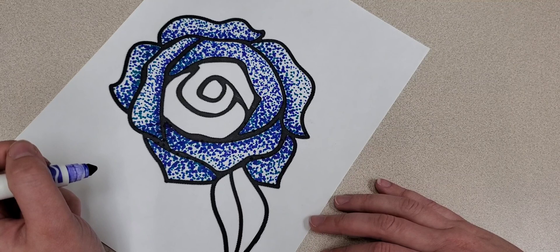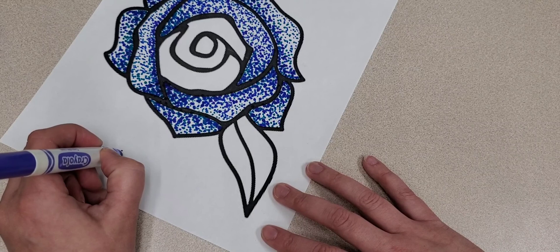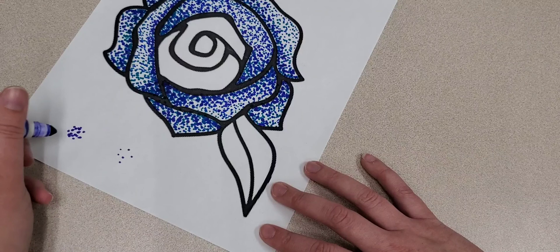The important thing is when you're doing this is that the closer together your spots are, so spots like that are going to be darker than spots like that.